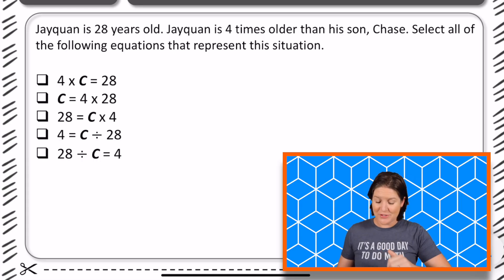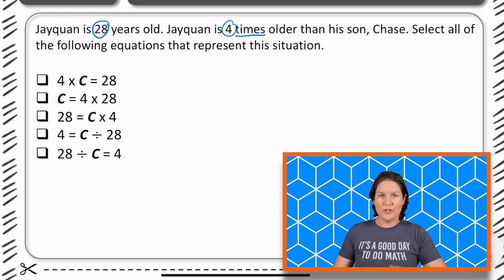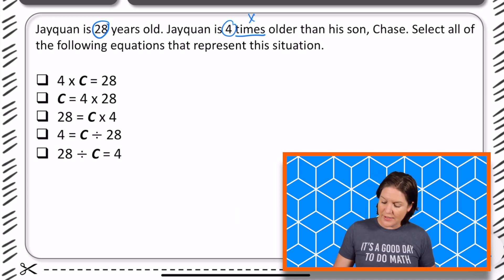All right, fourth grade. Welcome back. So let's go ahead and take a look at this one. It says Jaquan is 28 years old. Jaquan is four times older. Usually in this case, that would be four times older than his son, Chase.